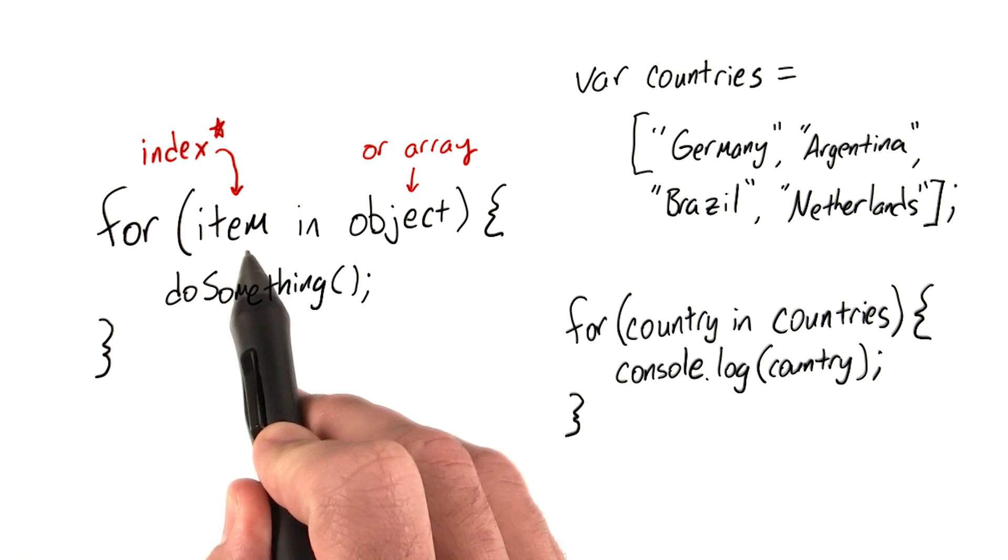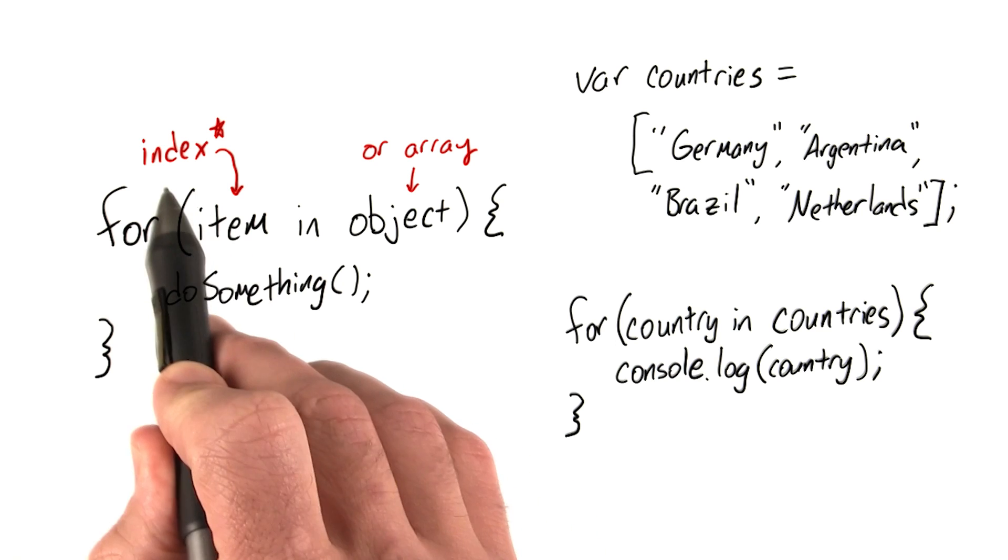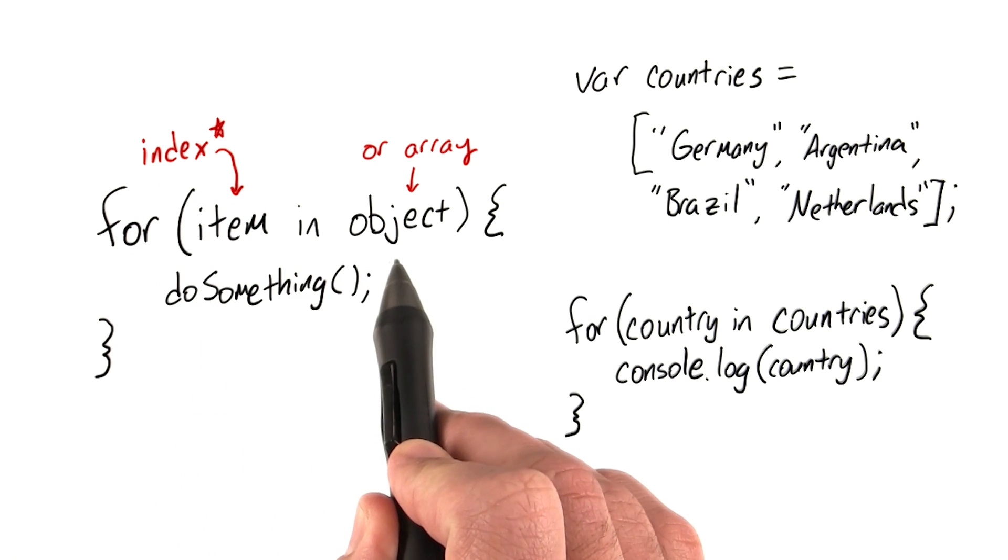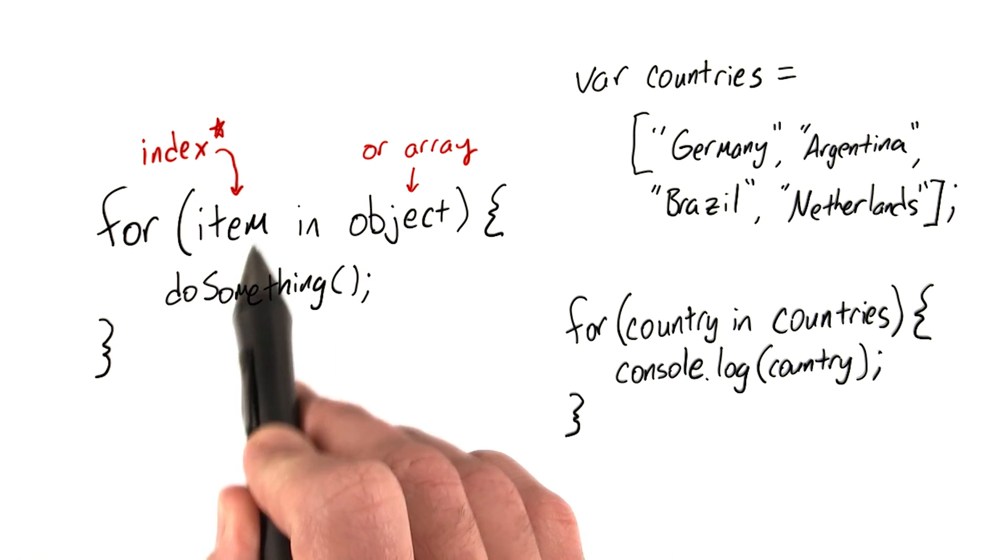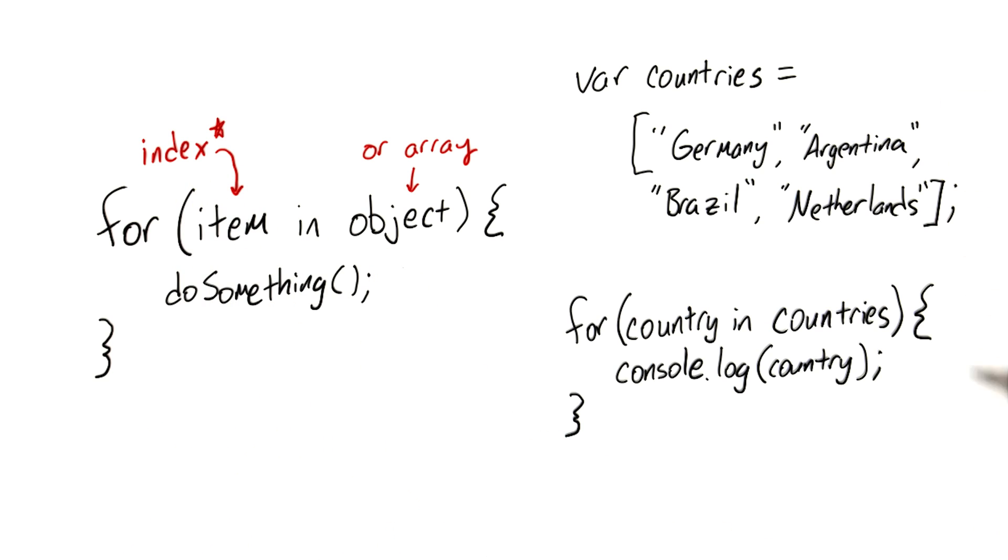It's important to note here that this item, this iterator in this list, is actually the index of the item in the object, not the value held at the index in the object. So let's take a look at an example. We have an array called countries, which has the top four teams of the 2014 World Cup.